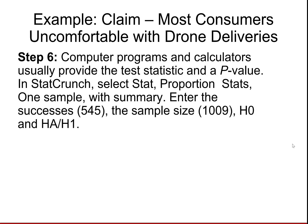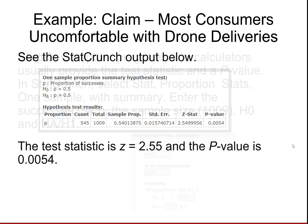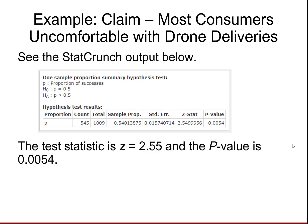We're going to use StatCrunch. Select Stat, Proportion Stats, One Sample with Summary. Enter the number of successes, which was 545, and the sample size. Under Perform, enter the values for the null and the alternative: P for the null is equal to 0.5, and for the alternative, use the drop-down menu to specify greater than 0.5. Here's the output: the Z statistic is 2.55, and the p-value is 0.0054.